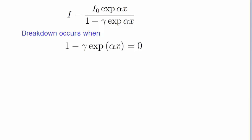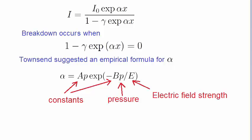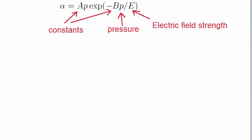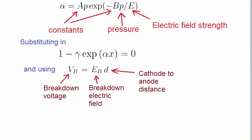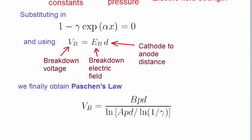We need to obtain an expression for alpha. In the early days of discharge physics, John Townsend conducted many experiments, and out of these he came up with an empirical equation to the form of alpha, given by this equation, where A and B are constants, p is the pressure, and E is the electric field strength. Substituting this expression for alpha in our previous expression, given by this, and making use of the relationship between the potential difference at breakdown—that is the breakdown voltage Vb—the electric field, and the distance d between the electrodes, we can finally arrive at the expression for the breakdown voltage Vb.